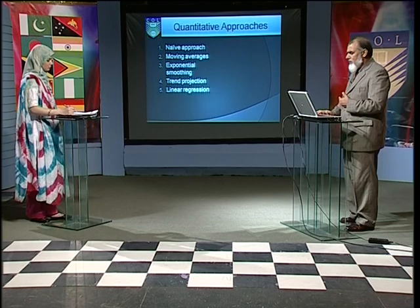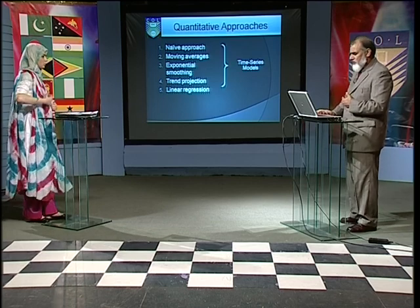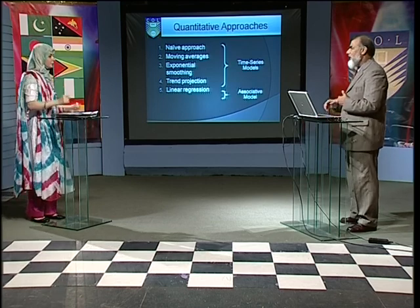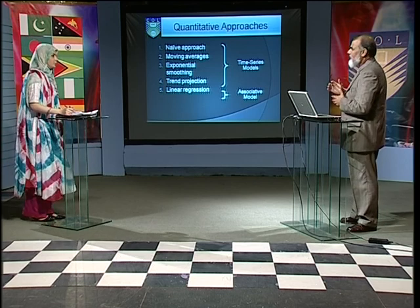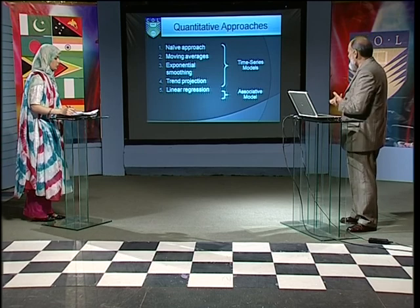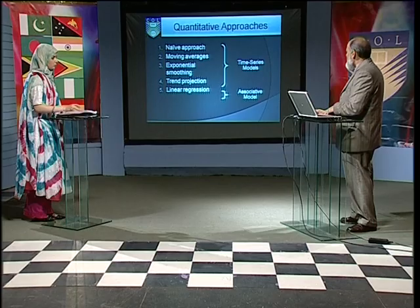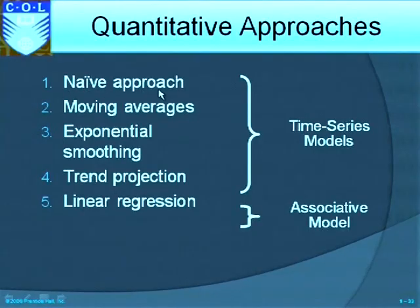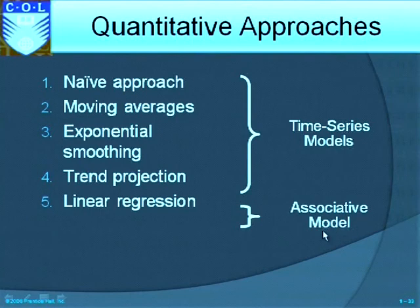There are a number of quantitative approaches. Some are time series based, others are basically about relationships between variables. The time series models include naive approach, moving average approach, exponential smoothing, and trend projections. All these are categorized as time series models, whereas linear regression is considered an associative model. We'll be discussing all of these in some detail.